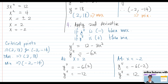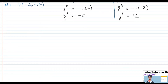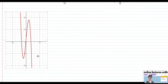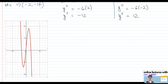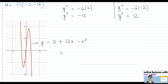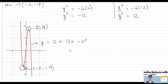You can always confirm your answer using a grapher. Looking at the graph of y = 2 + 12x - x³, we can clearly see the maximum point at (2, 18) and the minimum point at (-2, -14). I hope you have learned something watching this video regarding critical points and identifying the maximum and minimum points. Thank you for watching.